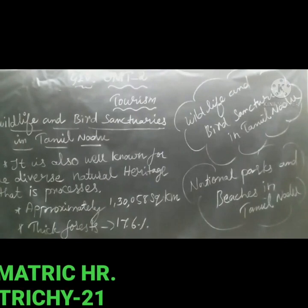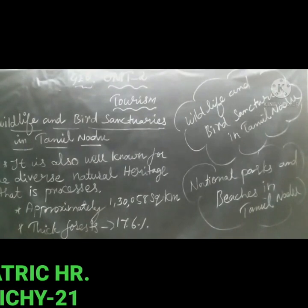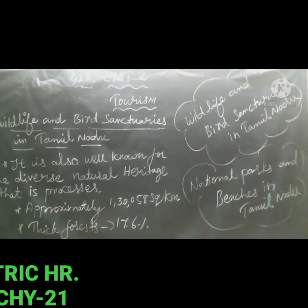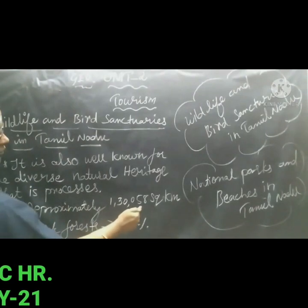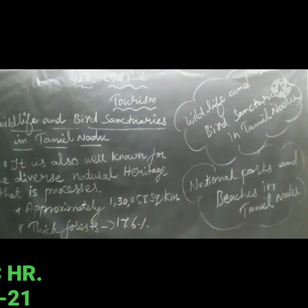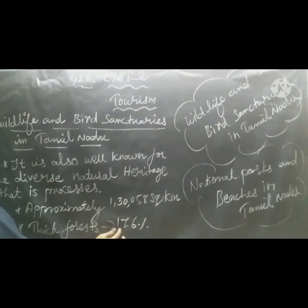The total area of Tamil Nadu is approximately 1,30,058 square kilometers. About 17.6 percentage of the land area comprises thick forest.